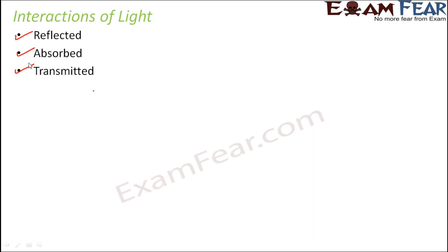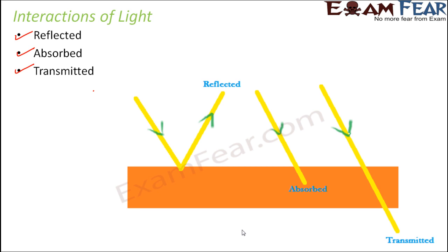Now, depending on whether the light gets transmitted, absorbed, or reflected, materials are classified as transparent, translucent, or opaque. Whenever light falls on an object, so this is the incident light — either the light will get reflected, that is it will bounce back, or the light will get absorbed by the object, or the light will get transmitted, that is it will pass through the object.